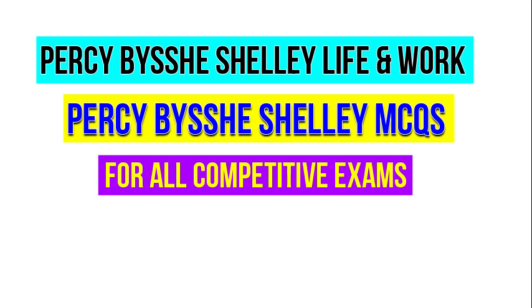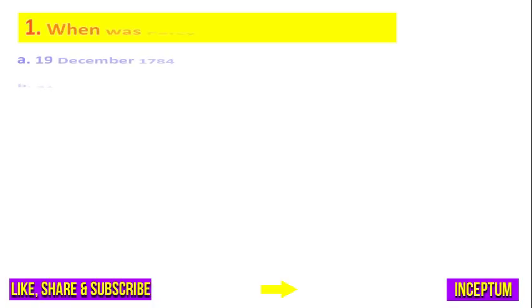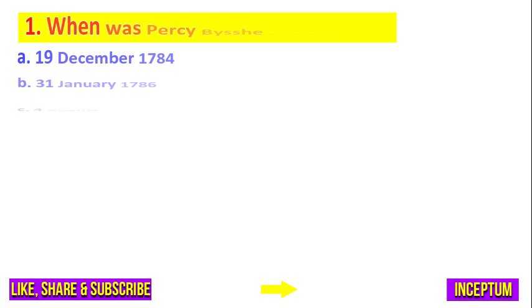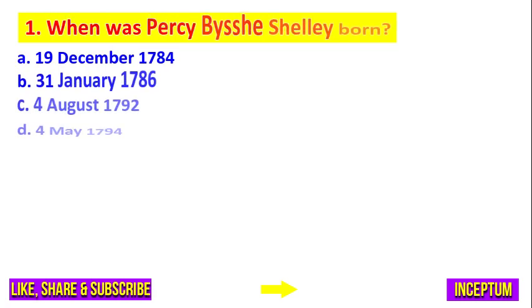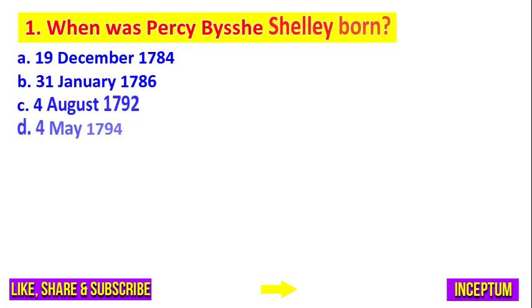So here is our first question. When was P.B. Shelley born? And in the options we have: 19th December 1784, 31st January 1786, 4th August 1792, and 4th May 1794.